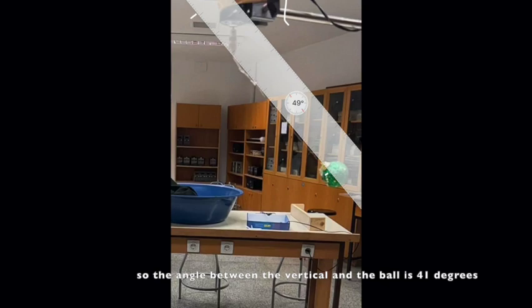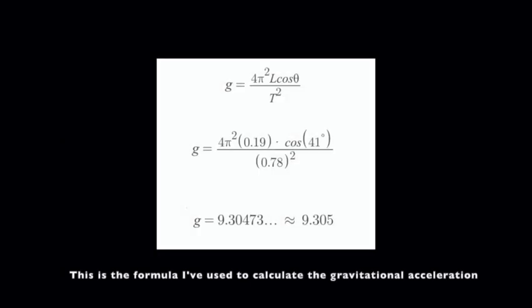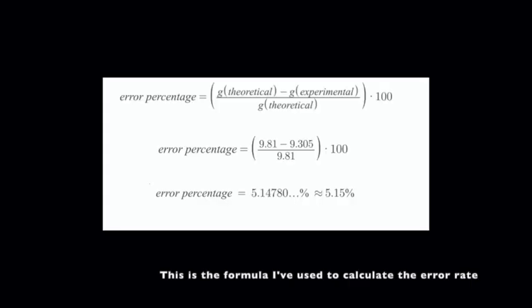So the angle between the vertical and the ball is 41 degrees. Here you can see the data I've collected in a table. This is the formula I used to calculate the gravitational acceleration. I measured g to be approximately 9.305 meters per second squared. Using the error rate formula, I found the error rate to be approximately 5.15 percent.